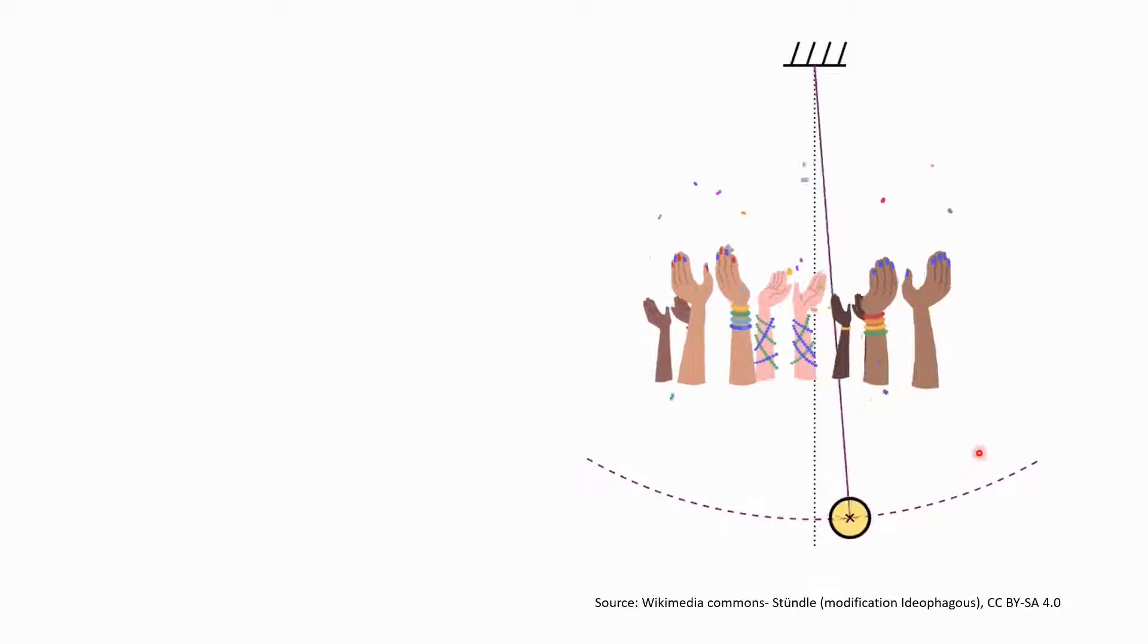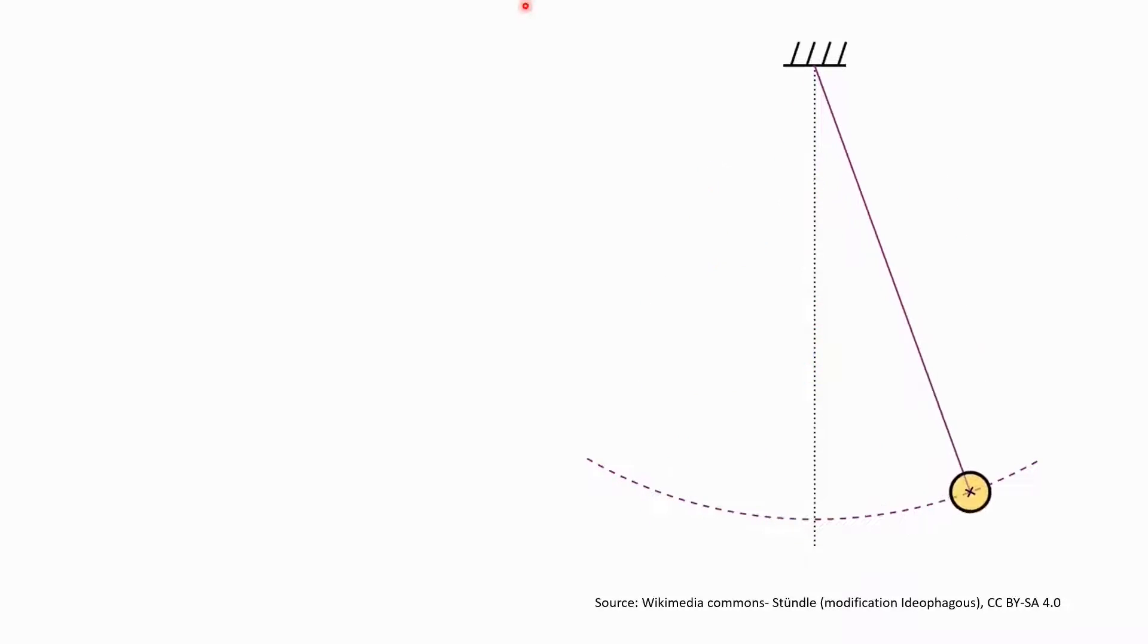In order to understand how chaos works, let's create a very simple model of the market. The model works like a pendulum, where the pendulum represents investor sentiment on a stock price. And the straight line is the real value of the stock. If sentiment over and underestimates the stock value, there is a restoring force that brings it back to its true value, which is what you would expect from a rational market.